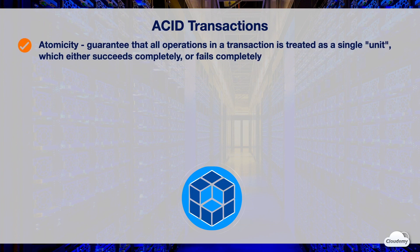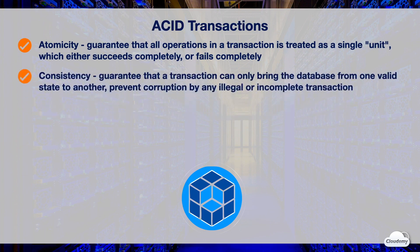Atomicity guarantees that all operations in a transaction are treated as a single unit, which either succeeds completely or fails completely. Consistency guarantees that a transaction can only bring the database from one valid state to another, preventing corruption from any illegal or incomplete transactions.